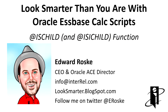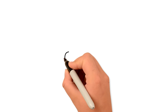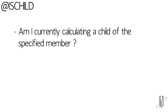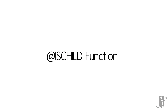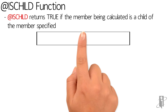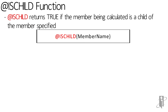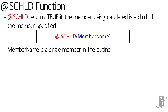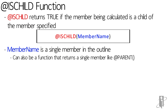Welcome to the isChild and isichild functions. isChild tells you if the member currently being calculated is a child of a member that you specify. isChild is far more helpful than isParent. It returns true if the member being calculated is a child of the member you specify. You can either specify a single member name, or a function that returns a member name like atParent or atAncest.